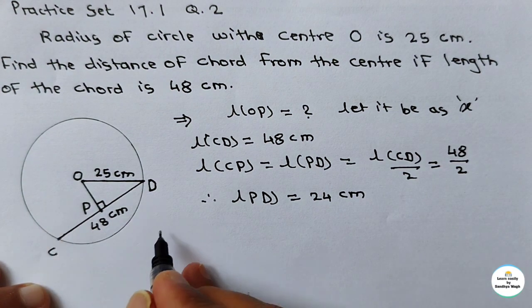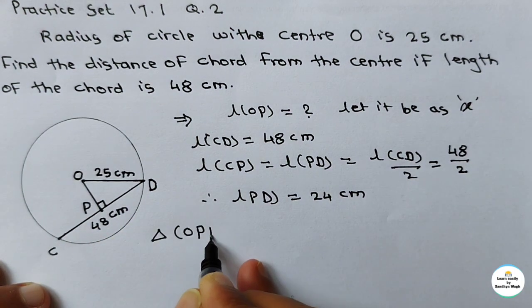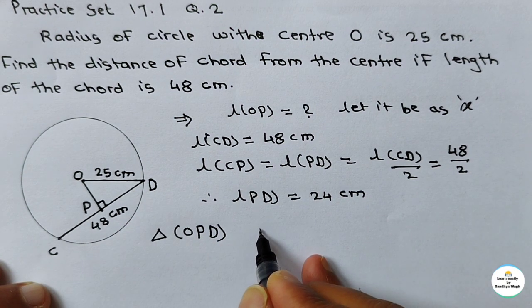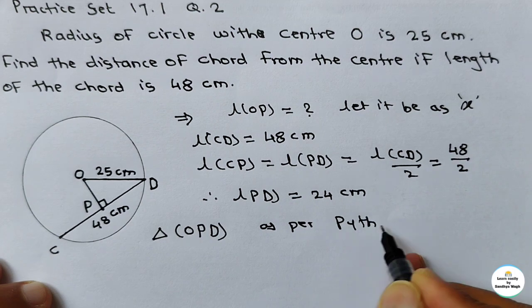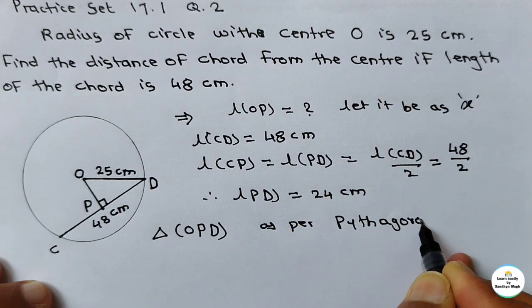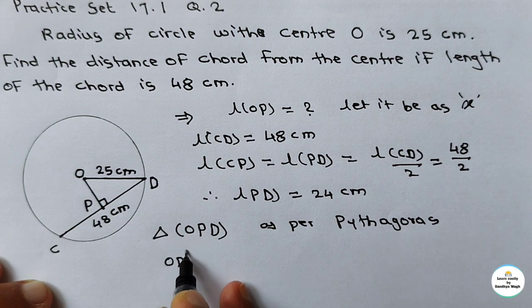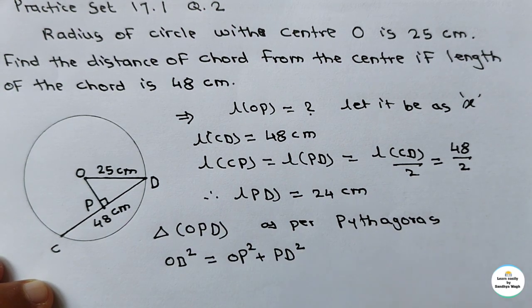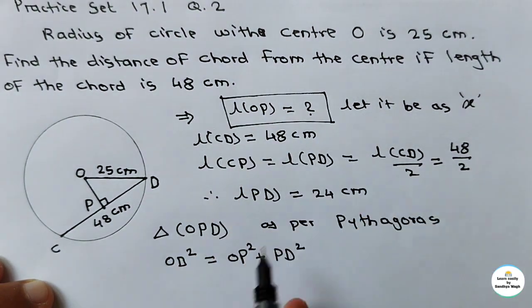Now consider triangle OPD — it is a right angle triangle with angle P as the right angle. As per Pythagoras theorem: OD² = OP² + PD². We require the value of OP. So OP² = OD² − PD². Since OP is considered as X, X² = OD² − PD². OD is the radius, which is 25, and PD is 24.